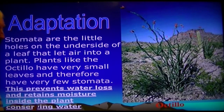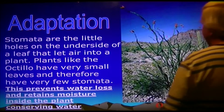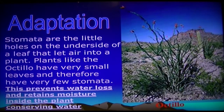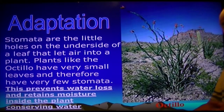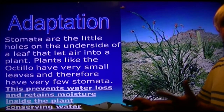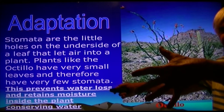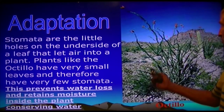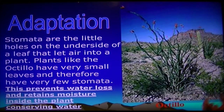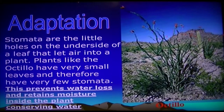Stomata are little holes. In the tropics those holes are much larger, and leaf structures are much larger — like banana plants with huge fan leaves. Desert plants don't have the availability of water, so they've adapted with smaller stomata, which conserves the amount of water they emit into the atmosphere to cool themselves down.